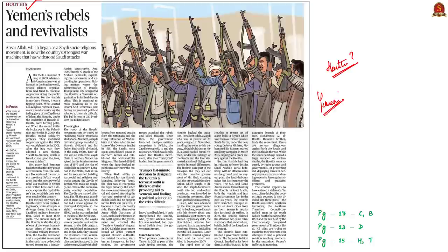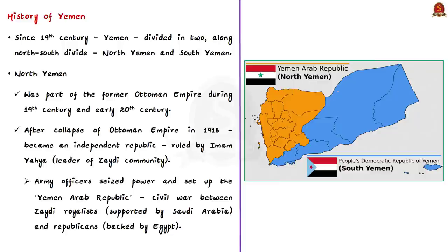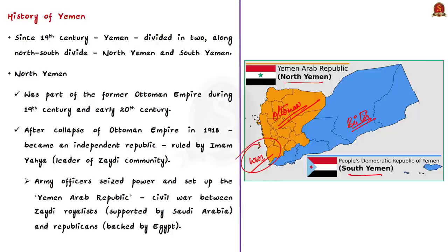Since the 19th century, the area that comprises Yemen today has been divided into two parts: North Yemen and South Yemen. North Yemen was part of the former Ottoman Empire during the 19th century and early 20th century, before World War I. South Yemen fell under British influence from 1839. After the collapse of the Ottoman Empire in World War I, North Yemen became an independent republic and was ruled by Imam Yahya, who was the leader of the Zaydi community.